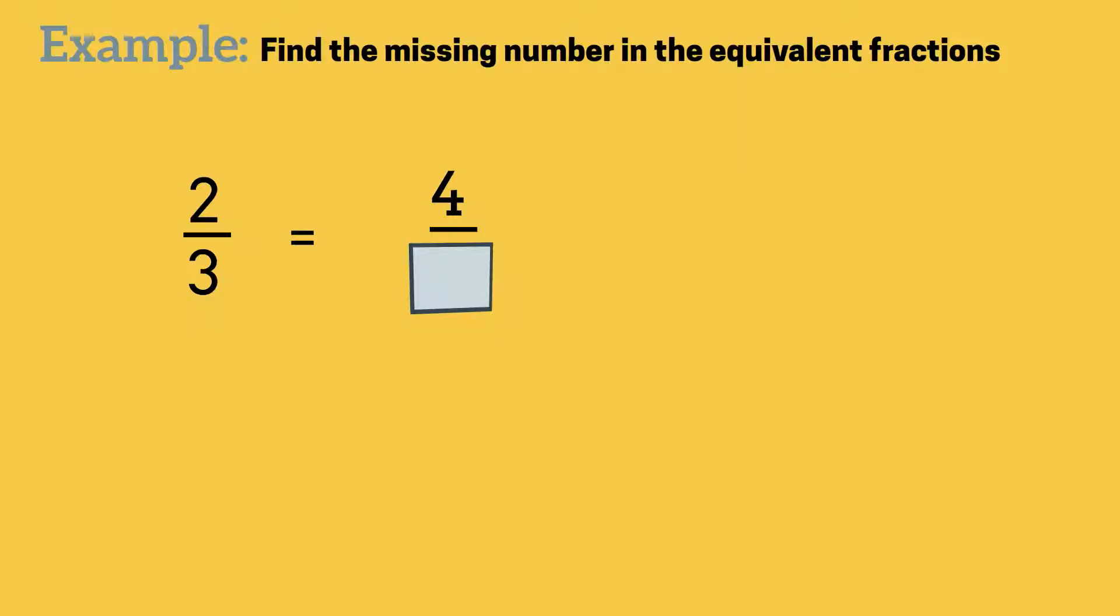Let's have a look at some examples. I've got here an equivalent fraction pair, 2 thirds equals 4 over something, and I'm being asked to find the missing number. What I've got to be thinking is, how did I get from 2 to 4 on the top numbers? I multiplied it by 2.